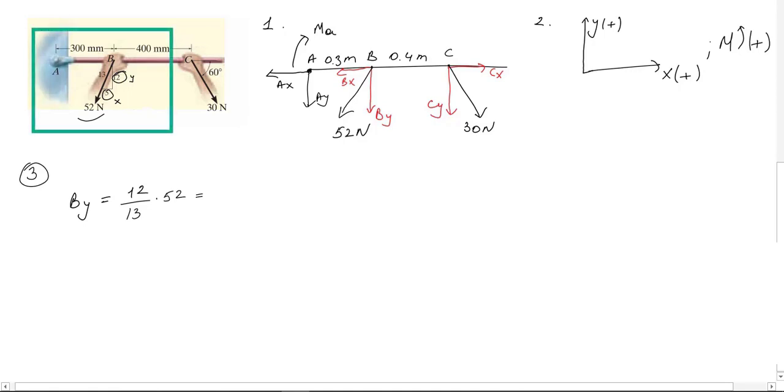To find any component, let's say in this case y component, we just divide magnitude of y component to the hypotenuse. That is how we get 12 over 13. Now you can easily find x component as well by looking at triangle. It will be 5 over 13 times 52 newtons, and results are 48 newton and 20 newton respectively.